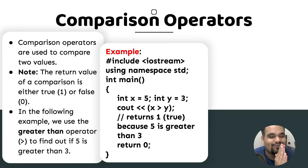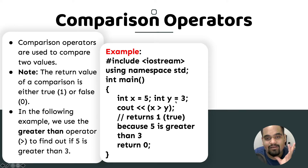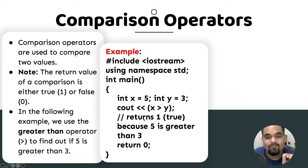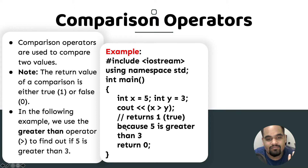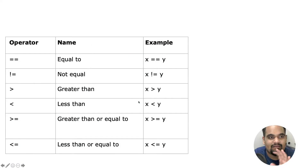In the following example, we use the greater-than operator to find out if 5 is greater than 3. We declare x = 5 and y = 3 and compare both of them. If x is greater than y, it returns 1, which is true — five is greater than three — so the output of this program is 1.